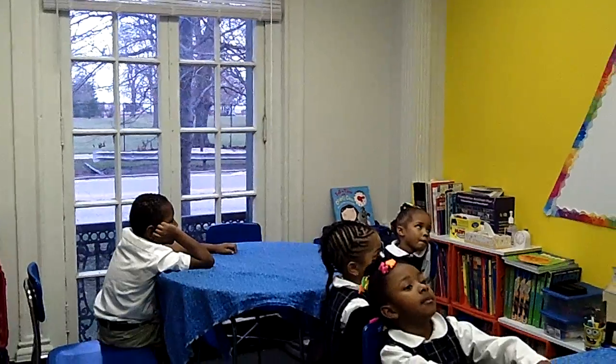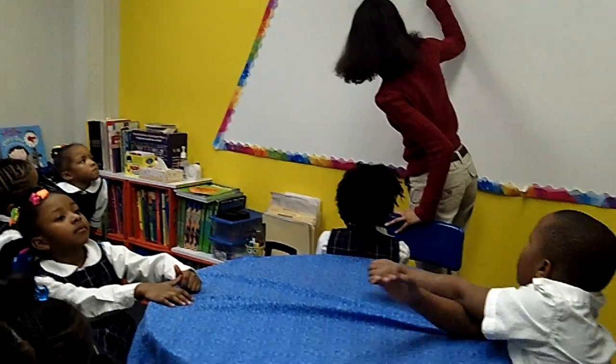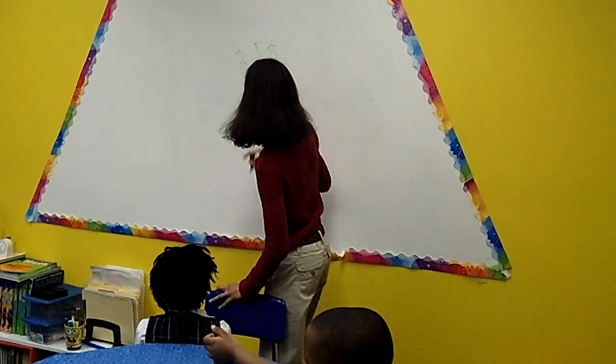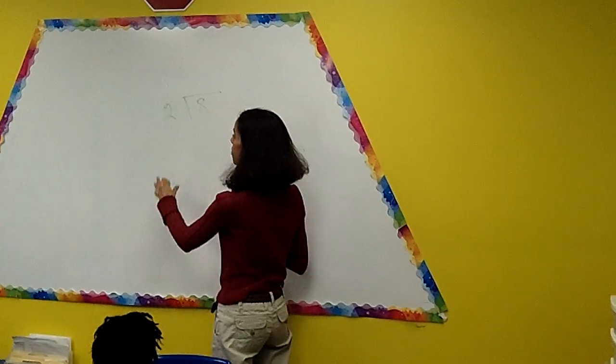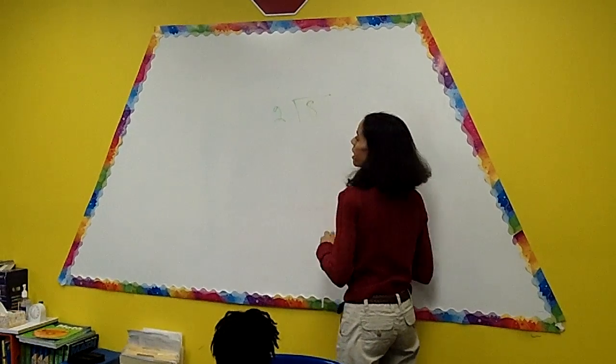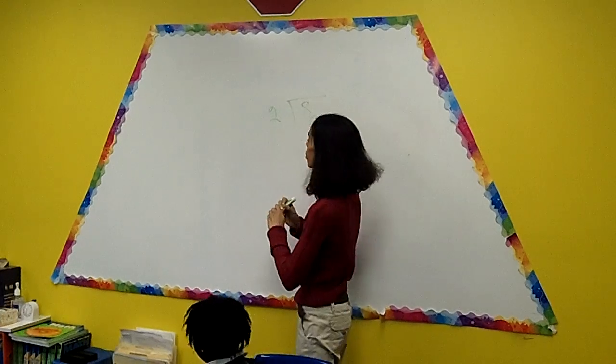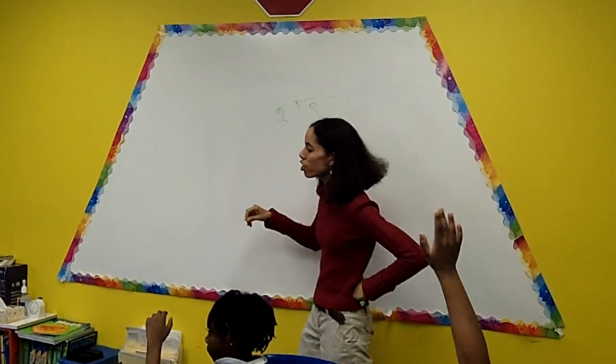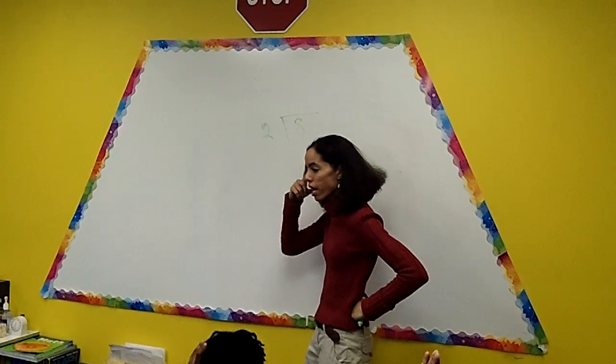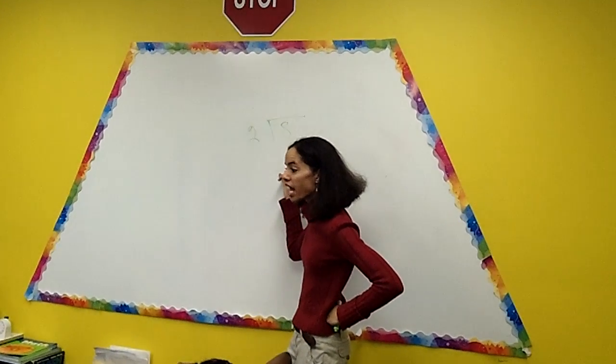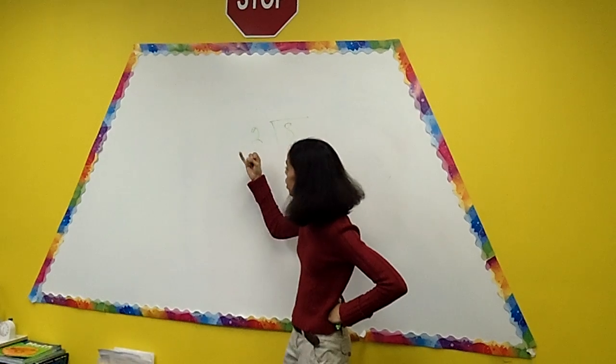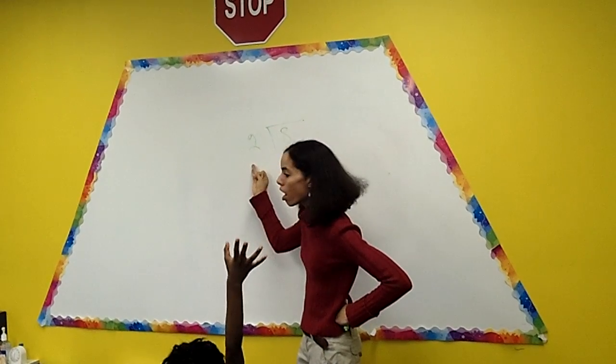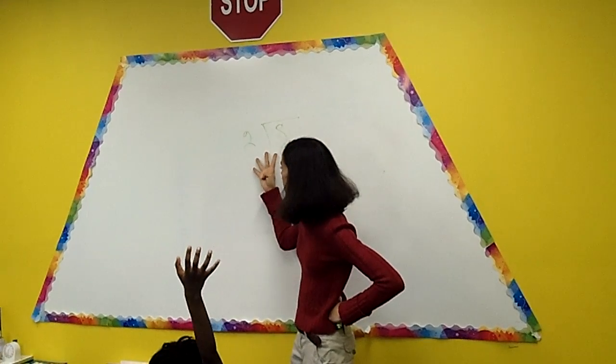Divided by. So eight divided by two. I want to know how many times can the number two be added into eight. Or if I were to break up eight into groups of two, how many groups would I have? So we're going to think of the number eight in our head and we're going to count by twos. So that's two, four, six, eight.